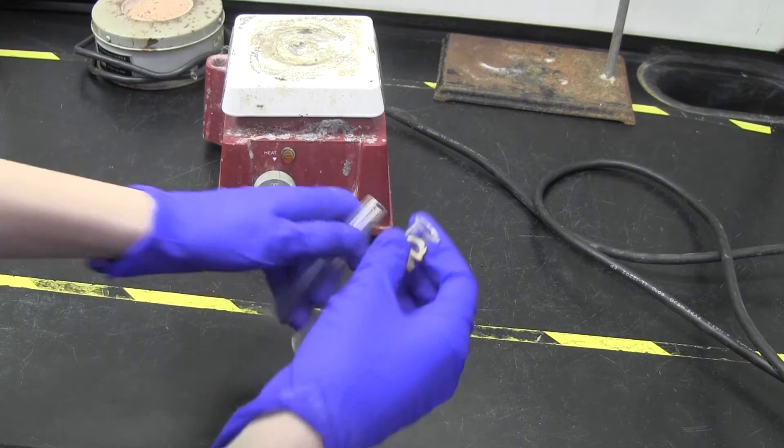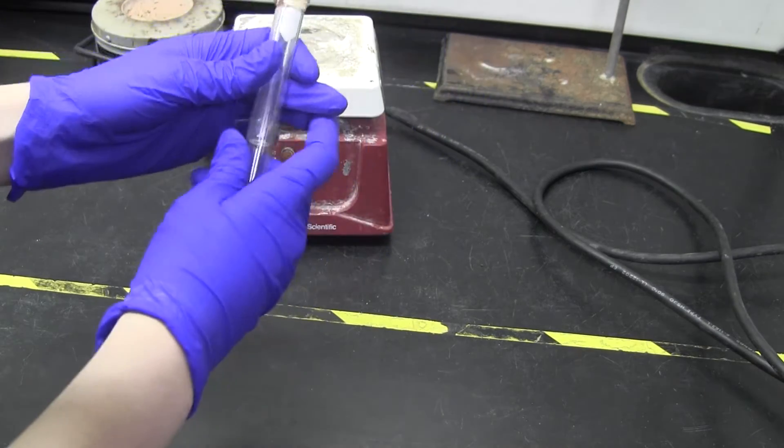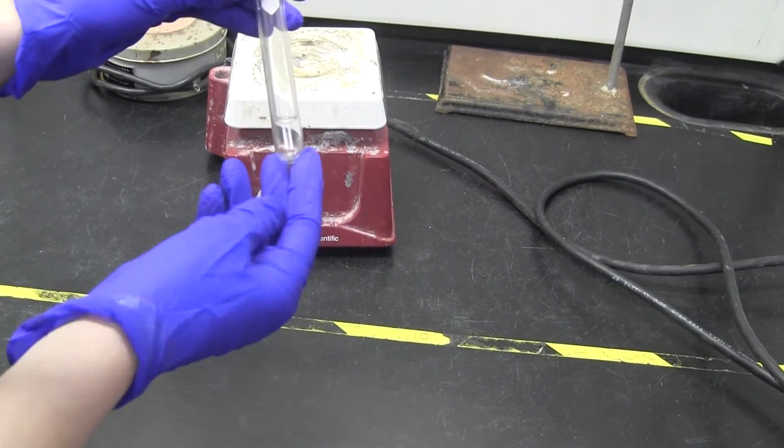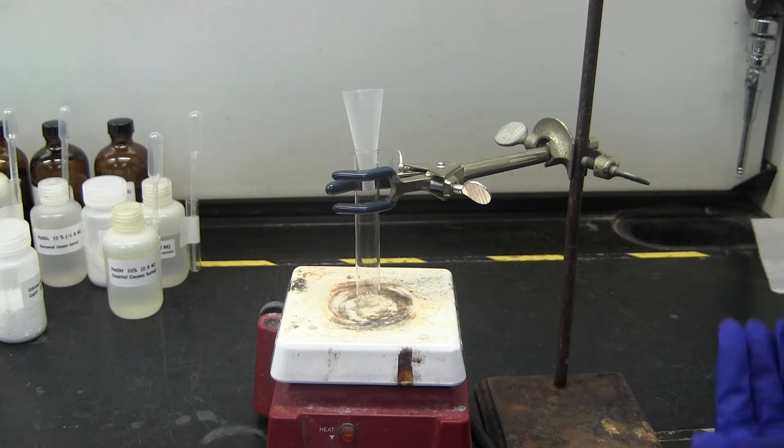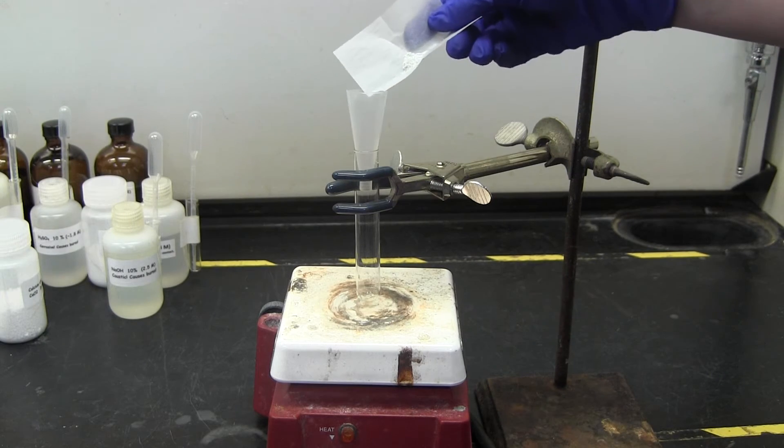The placement should create about an inch gap between the bottom of the large test tube and the bottom of the small test tube. Once the correct placement is found, try not to move the rubber band, but separate the two tubes to add your unknown.